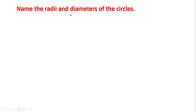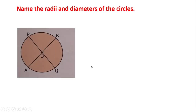Let us take some problems on these definitions. Name the radii and diameter of a circle in the given figure. Here is the given circle along with some line segments inside it. We have to identify the radius as well as the diameters. A line segment which joins the center and any one point on the circle is called a radius. From the center, there are four line segments whose endpoints lie on the circle. So these four line segments will be called the radii.